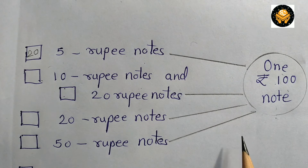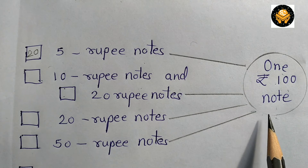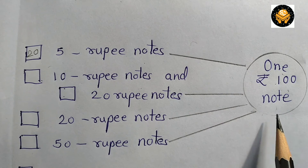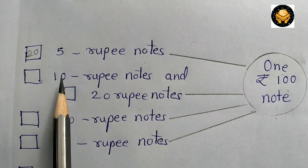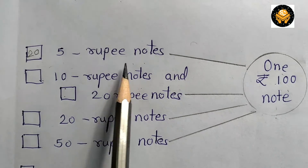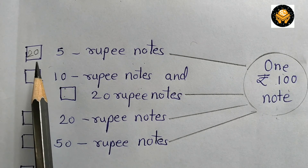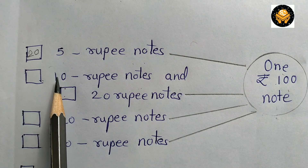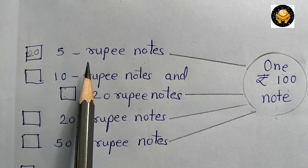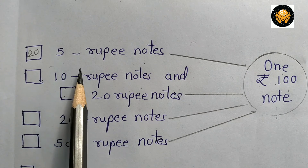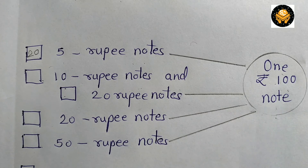Now let's move to the second example. To find the change for a 100 rupee note in the form of 5 rupee notes, you require 20 notes of 5 rupees. So 20 fives are 100.